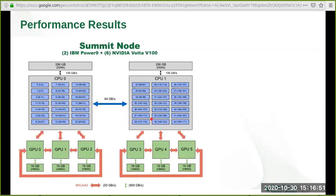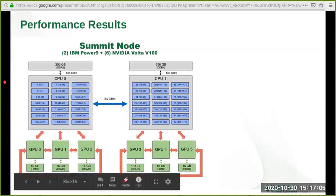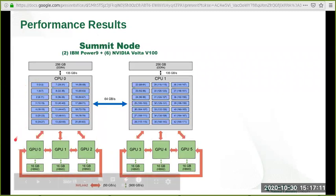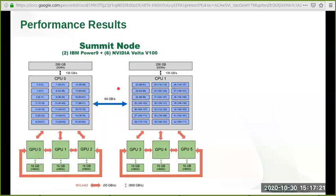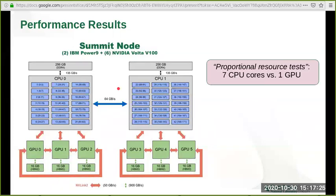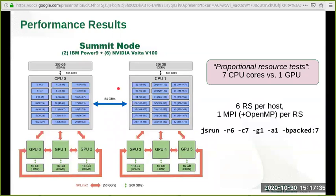We perform our work on Summit at the Oak Ridge Leadership Computing Facility. Here we have a diagram of a Summit compute node which consists of two IBM Power9 processors and six NVIDIA Volta GPUs. Each Power9 has 21 physical cores available for running user applications. Three GPUs and a Power9 socket are interconnected with NVLink. Two Power9 sockets are connected by an X-Bus. From this diagram, we can see that a fair performance comparison between the CPU and GPU version can be obtained using what we call the proportional resource test, where we compare the performance of seven physical CPU cores using multi-threading OpenMP versus one GPU with OpenMP offload.